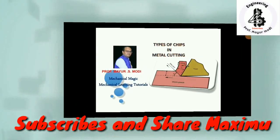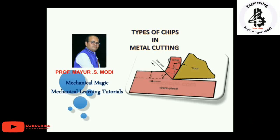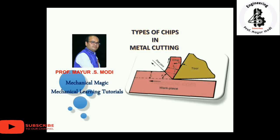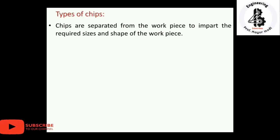Welcome to my YouTube channel Mechanical Magic, Mechanical Learning Tutorials. In this video I am talking about types of chips in metal cutting operations. The output, or result, of the cutting process is generally in the form of chips. According to the different kind of material being used, different kinds of chips are generated during cutting operations.